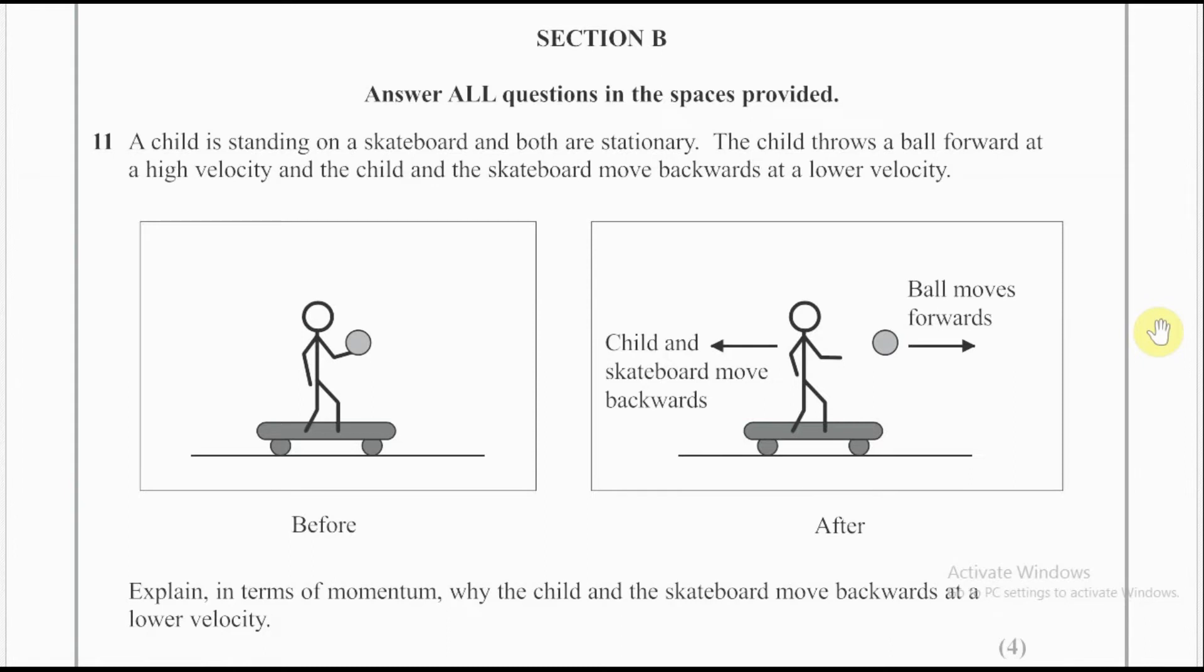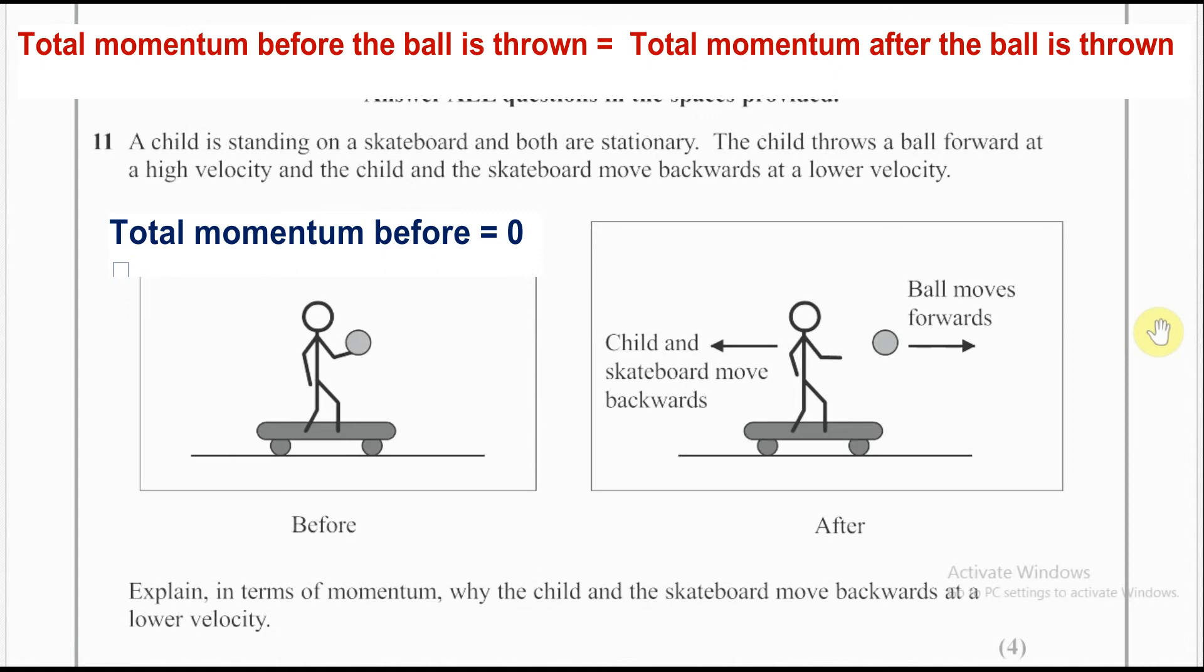In this question since the child, the ball, and skateboard are initially at rest, initial total momentum of the system is zero. According to conservation of momentum, the total momentum before the ball is thrown should be equal to the total momentum after the ball is thrown.